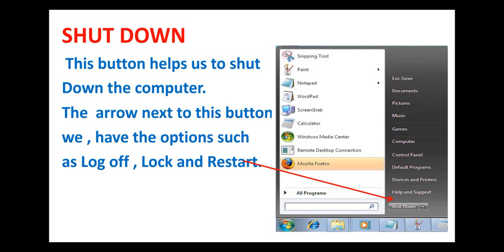The shutdown button helps us to shut down the computer. The arrow next to this button gives us other options such as log off, lock, and restart. So when you click on that arrow next to shutdown, you can also restart your computer or lock your computer. These are the various options available.